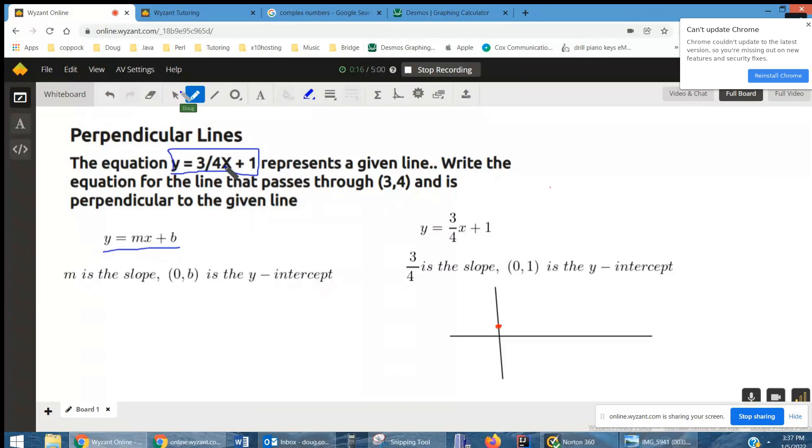The number in front of the x, or the coefficient of x, in this case the letter m, is the slope of that line.